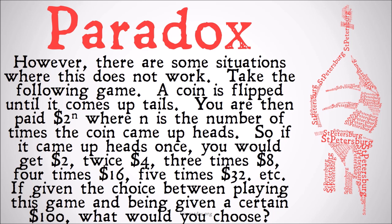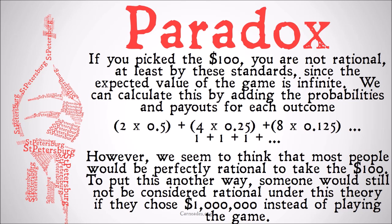If you pick the $100, you're not rational, at least by these standards, since the expected value of the game is infinite. You might say: I've got a 50% chance of not getting anything right off the bat, $100 is a sure bet, and I would have to get a lot of heads in a row in order to get more than $100. So how is it possible that the expected value is greater?